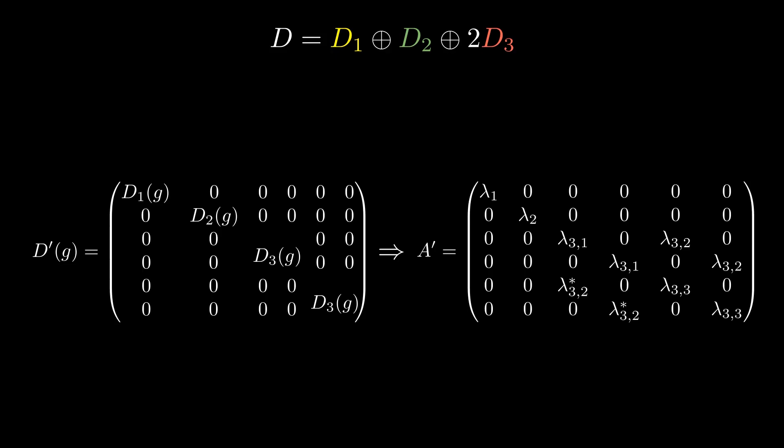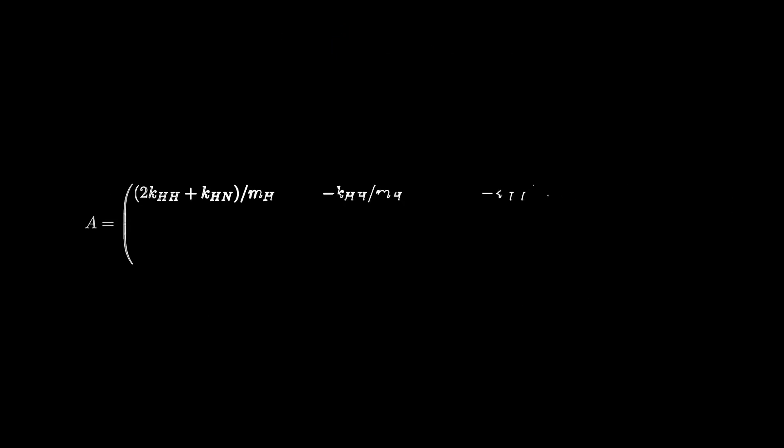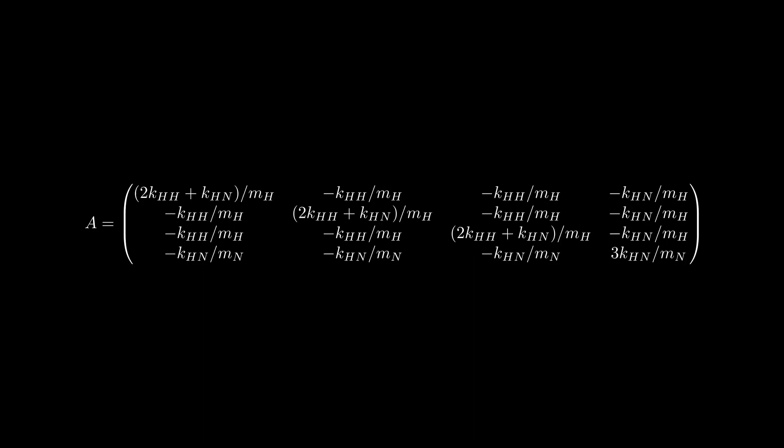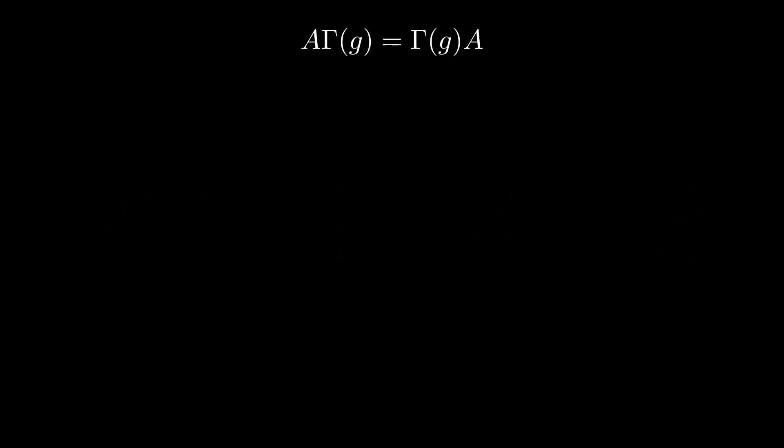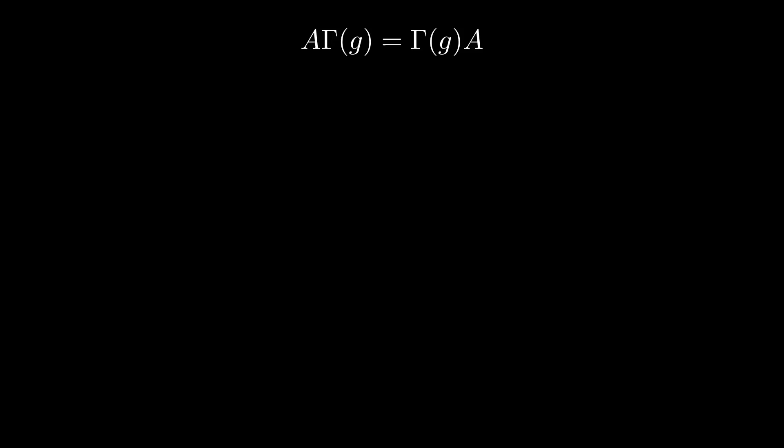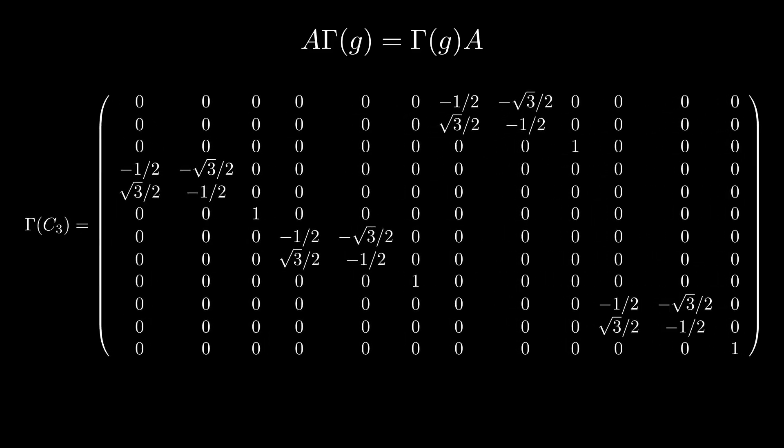We finally are all set to come back to our physics problem. Remember, we were trying to find the eigenvalues of this matrix, knowing that it commutes with the invariant transformations of our NH3 molecule. We saw in details two of these invariant transformations. First, the rotation C3, whose matrix gamma of C3 is given as follows using the compact notation. But don't forget that it is a 12-dimensional matrix, which we can write explicitly.